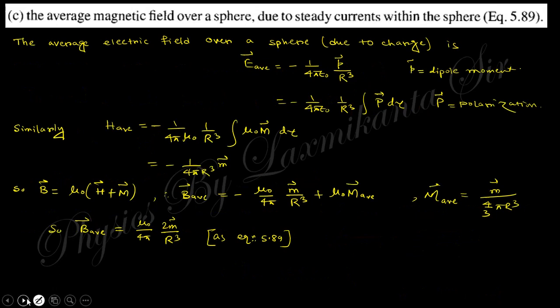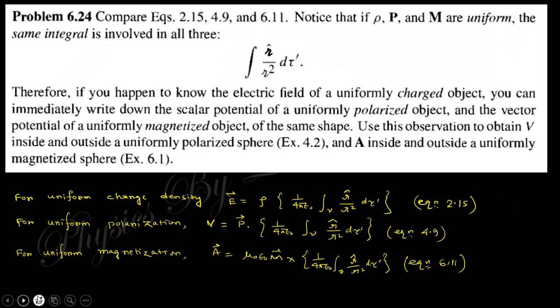Next, find the average magnetic field over a sphere due to a steady current. The average electric field due to a steady charge dipole equals −p/(4πε₀R³), where p is the dipole moment. Analogically, average H will have the same form, and replacing P with μ₀M, we finally obtain the average B.